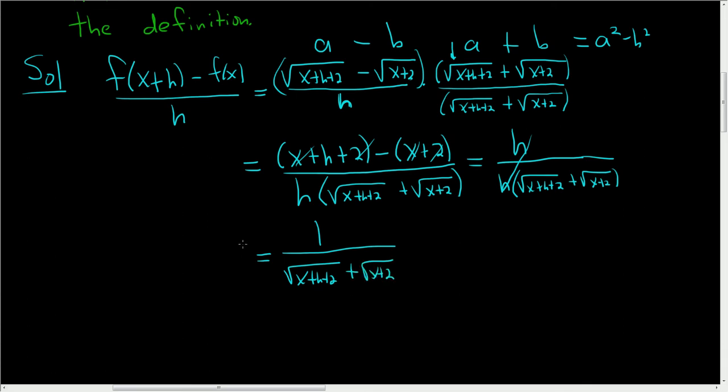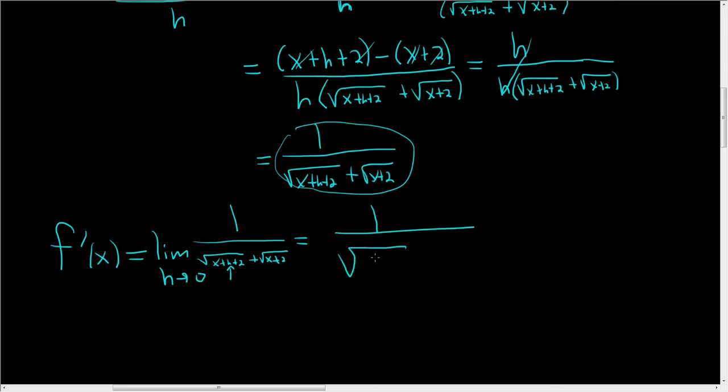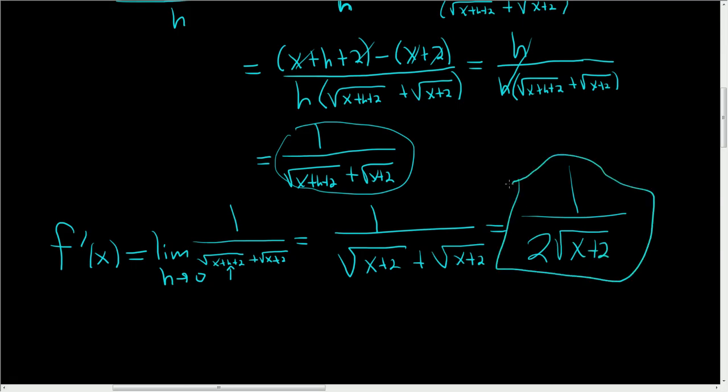All right, so now we're ready to take the limit. The derivative of our function f at x by definition is equal to the limit as h approaches 0 of the difference quotient. This is the difference quotient, we worked it out, we simplified it. So it's 1 over the square root of x plus h plus 2 plus the square root of x plus 2. So when we plug in 0 here, we end up with 1 over the square root of x plus 2 plus the square root of x plus 2. So we get 1 over 2 square root x plus 2. And that's how you find the derivative using the definition.